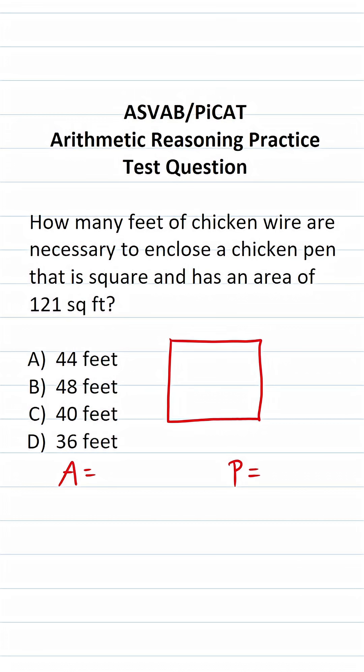One property of squares you should know is that all the sides are equal. So in other words, if this side is S, all these other sides are S as well.